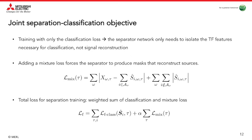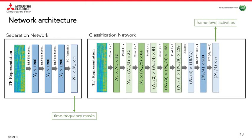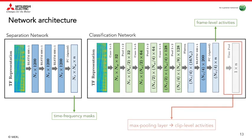The separator network in our model is composed of a three-layer BLSTM stack, each layer including 600 nodes in each direction, followed by a fully-connected layer that outputs masks with the same size as the input mixture. The frame-level classifier is a CRNN with three two-dimensional convolutional layers, followed by a BLSTM layer, and a fully-connected layer mapping the BLSTM output to frame-level class probabilities. The clip-level classifier is a simple extension of the frame-level classifier, adding a max pooling operator to the CRNN output for each sound class to perform frame-level to clip-level mapping of class probabilities.